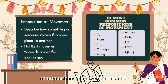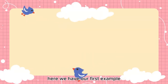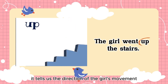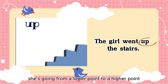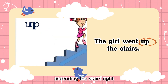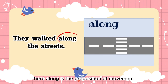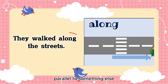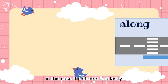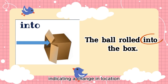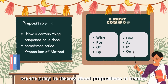Here are three examples of prepositions of movement. First: 'The girl went up the stairs' — 'up' tells us the direction of movement, going from a lower point to a higher point, ascending the stairs. Second: 'They walked along the streets' — 'along' indicates movement happening parallel to something else, in this case the streets. Third: 'The ball rolled into the box' — 'into' shows movement going from outside the box to inside it, indicating a change in location.